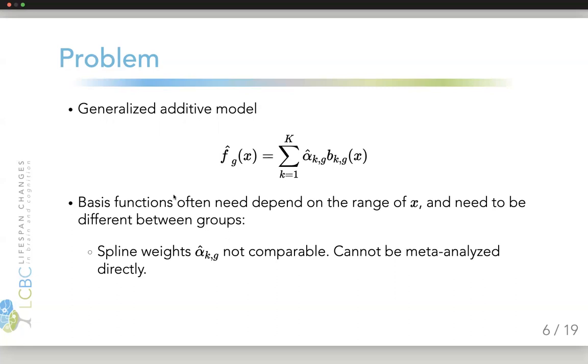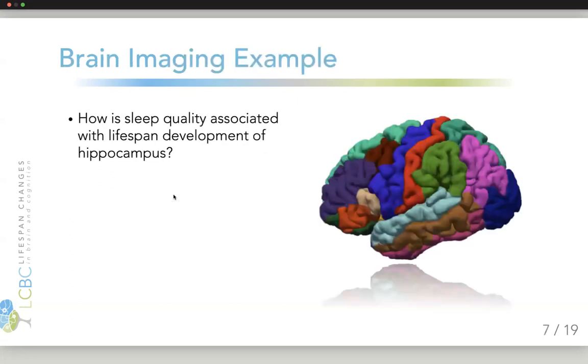However, the basis functions often need to depend on things like the range of x, and these will, by necessity, become different between groups. This makes the spline weights estimated in each group not comparable, and they can't be meta-analyzed directly as if there were standard regression coefficients.